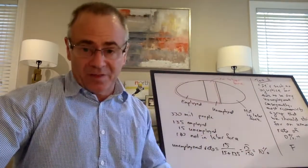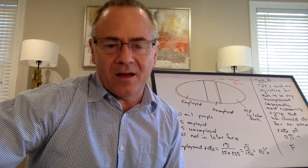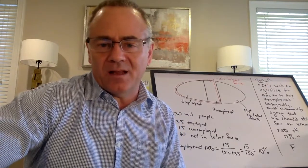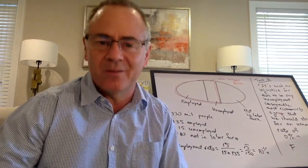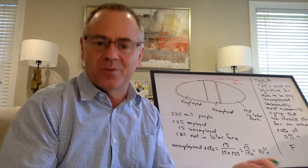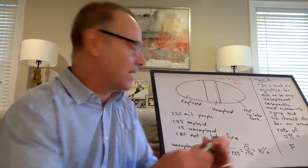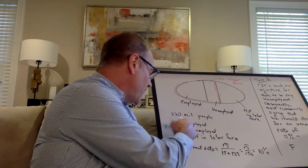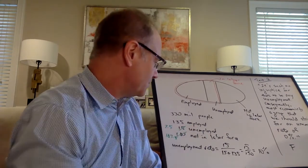Suppose the economy gets so bad that people who are unemployed become discouraged. They say, 'I'm not trying anymore — there's no way I can get a job, I'm going to stop looking.' Let's say half of the 15 million unemployed now tell the Bureau of Labor Statistics they're no longer actively looking. So now 7.5 million are unemployed, and the other 7.5 million are added to those not in the labor force, giving 187.5 million not in the labor force.